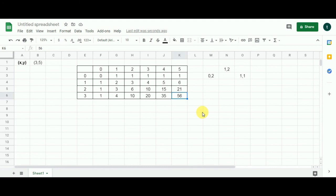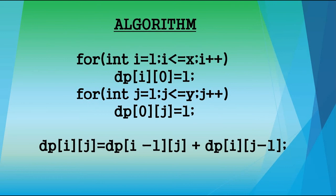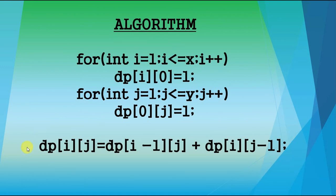Now let's see the algorithm. The first for-loop populates the 0th column with 1. The second for-loop populates the 0th row with 1. Then for each remaining cell, the expression dp[i][j] = dp[i-1][j] + dp[i][j-1] calculates the value — that is, the value of the cell above plus the value of the cell to the left of the current cell.